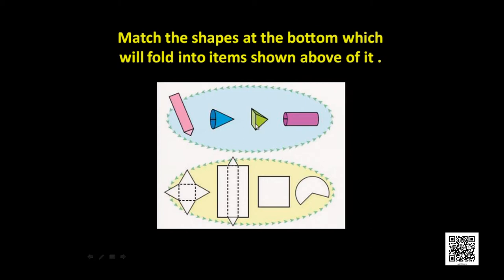You can draw this kind of figure in your notebook or on a piece of paper, fold it, and you will get the square pyramid. Similarly, here you see this shape — if I fold it, what will I get? This is a pencil-type object; if I fold this one I will get this one.